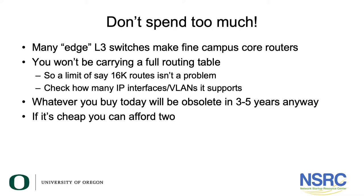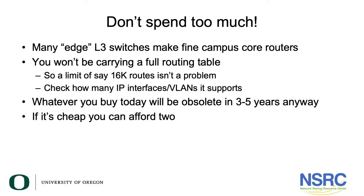Another piece of advice: don't spend too much. In fact, many edge Layer 3 switches will make fine campus core routers. Earlier in this session I said don't buy Layer 3 features for your edge switches — well, a lot of those edge switches could be used for the core router quite easily. You're not going to be carrying the full routing table, so a limit of 16,000 routes found in many Layer 3 switches is not a problem. Just keep an eye on how many interfaces and VLANs are supported — some cheaper Layer 3 switches only support 16, 32, or 64 VLANs, which could be problematic. And what you buy today will be obsolete in three to five years anyway — if it's cheap, you can afford two.